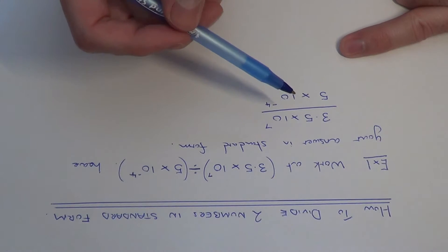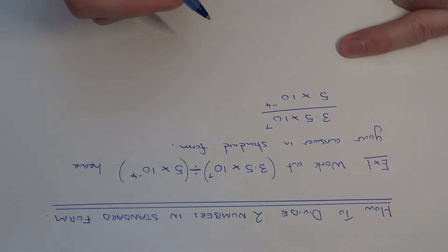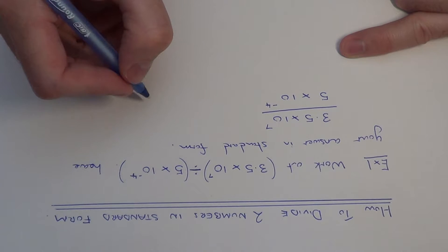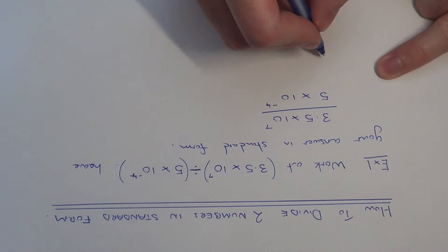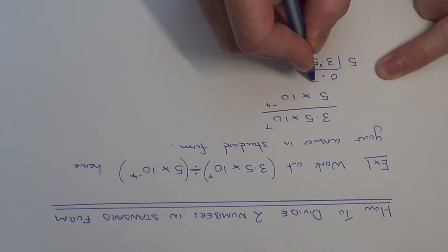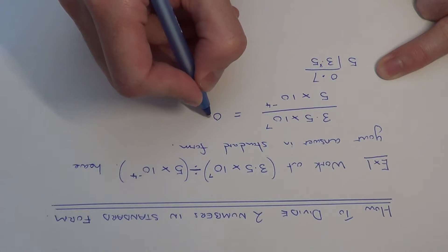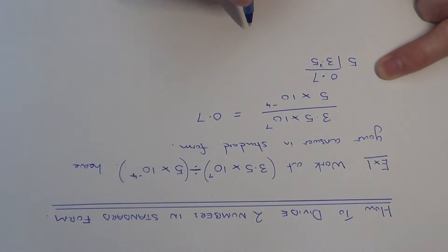So the first thing to do then is to work out 3.5 divided by 5. So we can do this by doing a little bit of short division. So if we do 3.5 and we need to divide that by 5, 3 divided by 5 is 0 remaining 3, 35 divided by 5 is 7. So the first bit of our answer is 0.7.